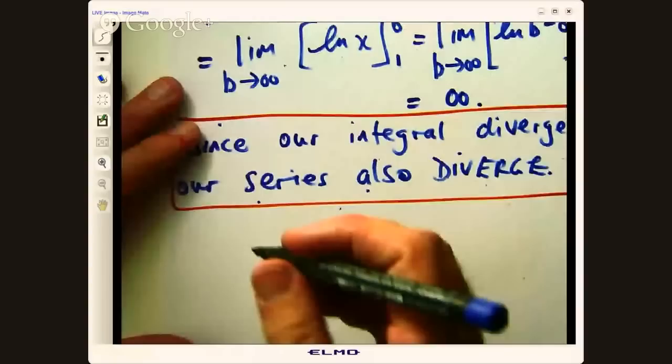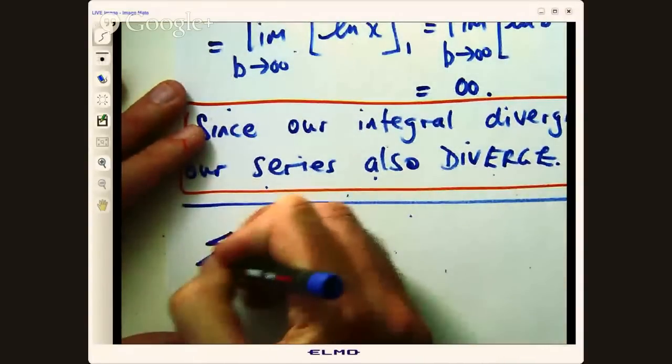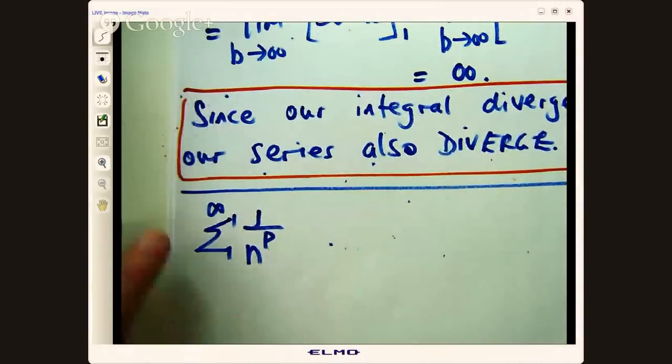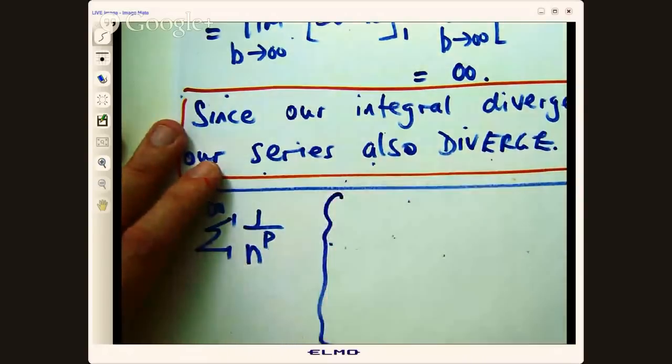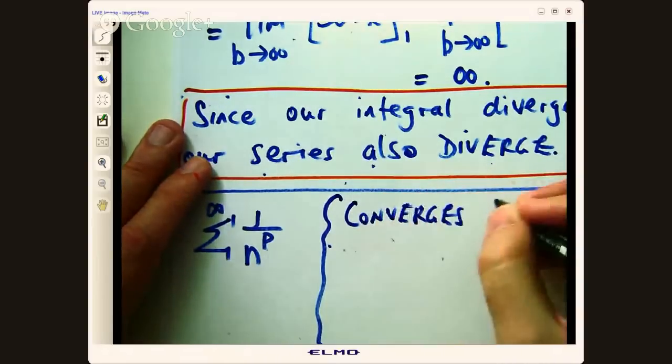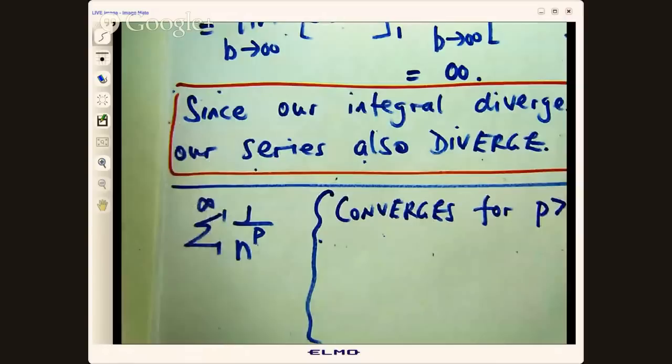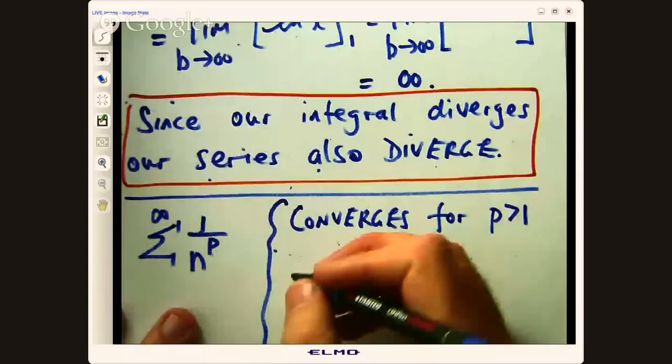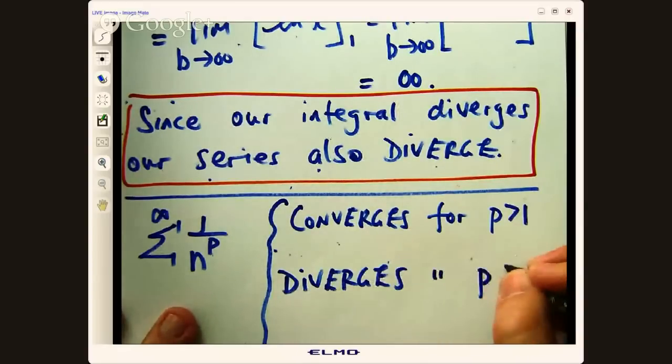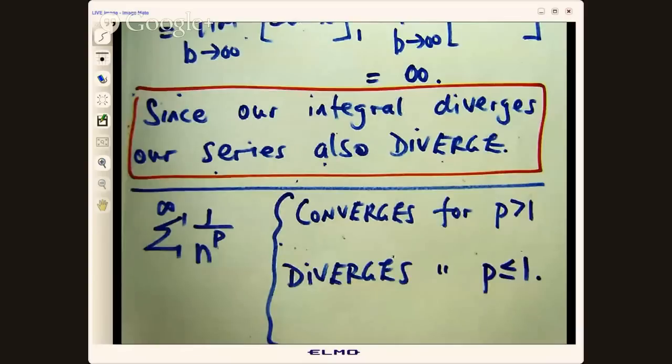So is there a general rule for these p series? Yes, there is. And I'm glad you asked. Let me write it down for you. So let's consider the following series. It doesn't matter really where we start the series as long as it's got positive terms. Sigma one on n to the power p. It converges for p greater than one. And it diverges otherwise, for p less than or equal to one. And you can prove that using this integral test.